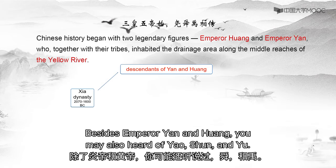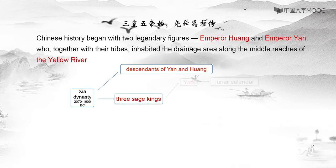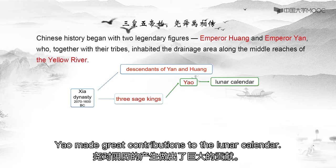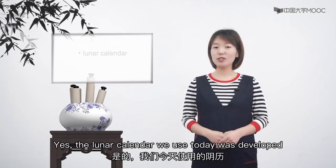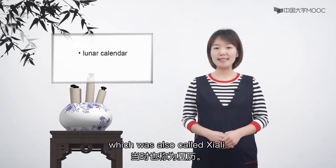Besides Emperor Yan and Huang, you may also have heard of Yao, Shun, and Yu. They were also from the Xia Dynasty, and were called the three sage kings after Emperor Yan and Huang. Yao made great contributions to the lunar calendar. The lunar calendar we use today was developed from Yao's calendar from the Xia Dynasty 3,000 years ago, which was also called Xia Li.